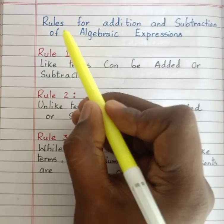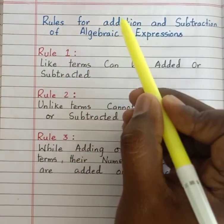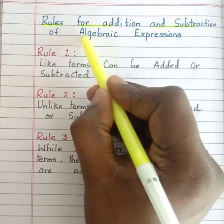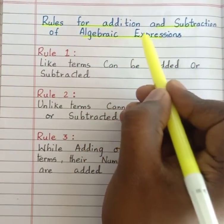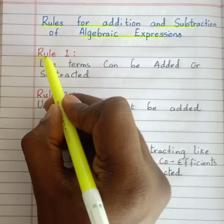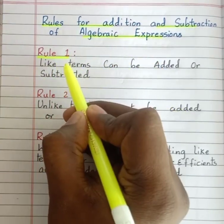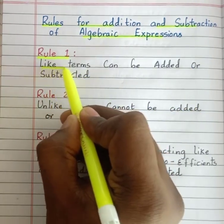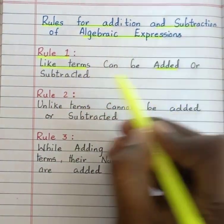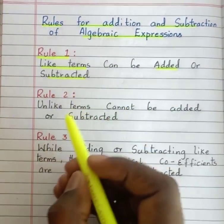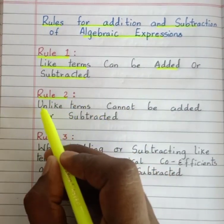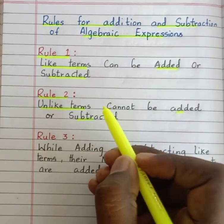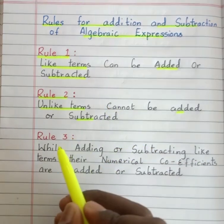Now we will see the rules for addition and subtraction of algebraic expressions. Rule 1: Only like terms can be added or subtracted — that is, same variable with same exponent. Rule 2: Unlike terms cannot be added or subtracted.